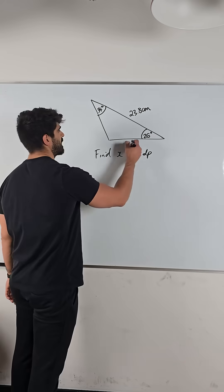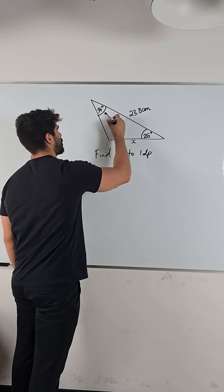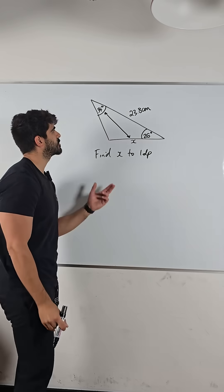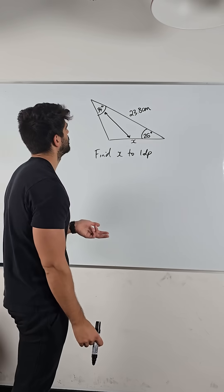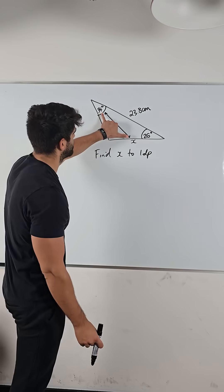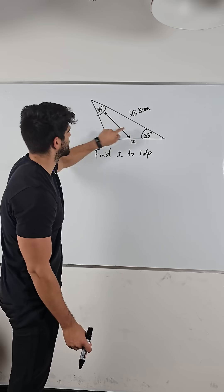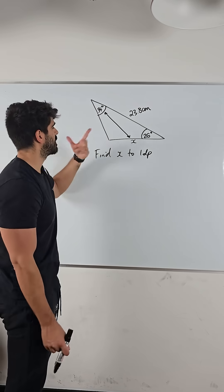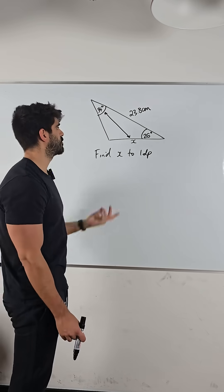So here I can see x which I'm trying to find and I can see its opposite angle. Now, if I was going to use the sine rule, then I'll need to find another pair. Well, this 26 has an opposite length and this length has an opposite unknown angle. So which one are we going to choose?